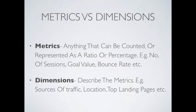On the other hand, dimensions describe the metrics — they tell more about the metrics. For example, sources of traffic cannot be counted; they cannot be represented as percentages or ratios. They are essentially direct traffic, referral traffic, organic traffic. Sources of traffic as a dimension is used to describe your total traffic on the site. Similarly, location or top landing page are also dimensions. Both metrics and dimensions are important to give a complete picture to an analysis.